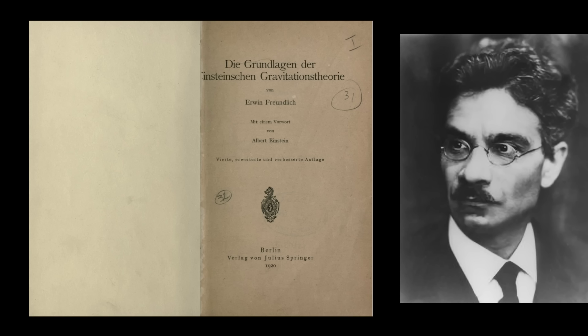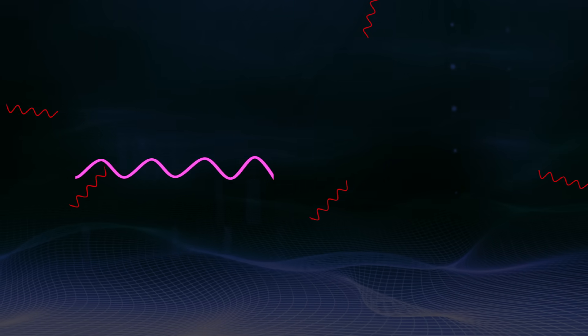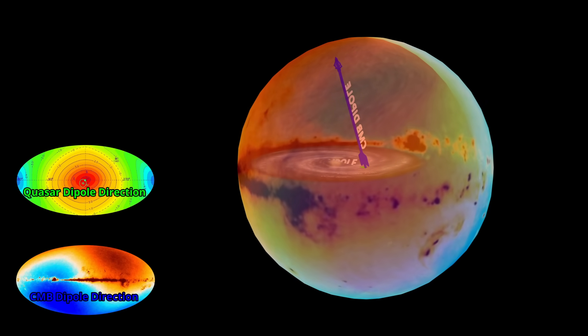Later, Erwin Freundlich explicitly connected this background to a tired-like mechanism, suggesting that photon energy loss over distance could both account for redshift and generate the microwave field without needing a hot big bang.